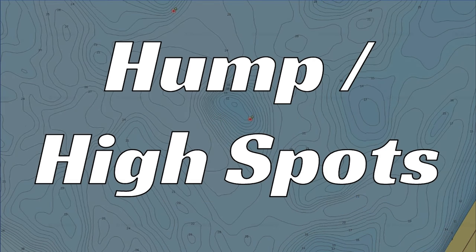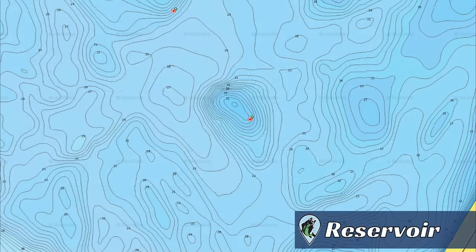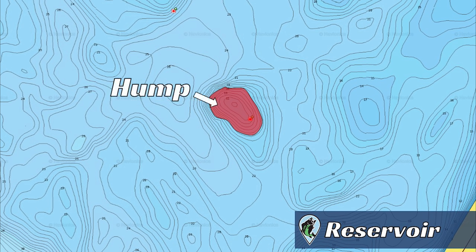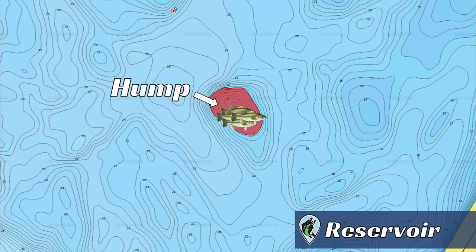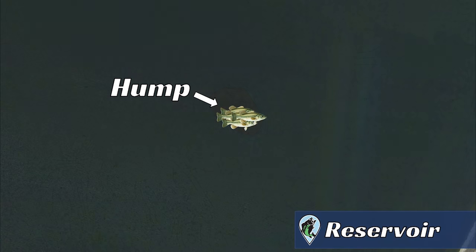Number two: Humps or high spots. Humps and high spots are another common structure found on most lakes across the country. On reservoirs, a hump is a shallower water area surrounded on all sides by deeper water. Changing to Google Earth and taking the lake down 10 feet, we can see that the hump is basically like an underwater island — shallower water surrounded by deeper water. Bass will set up on the sides and tops of humps. These humps are out in the middle of the lake and are very hard to find unless you use a contour map, because they're not connected to the shore.